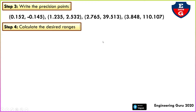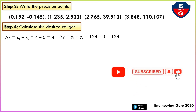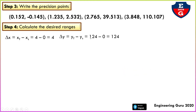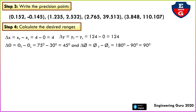Step 4: calculate the desired range. Find delta x equal to xf minus xs = 4 − 0 = 4. Find delta y = yf − ys = 124 − 0 = 124. For the desired range: delta theta = theta_f − theta_s = 75 − 30 = 45°, and delta phi = phi_f − phi_s = 180 − 90 = 90°.